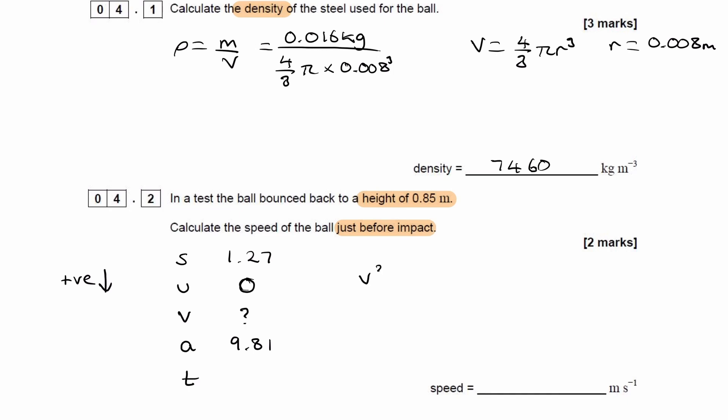And we're trying to work out the speed just before it hits the ground. So we can use v² = u² + 2as. V is then the square root of, so u is 0, so this will just be 2as, 2 times as. And that gives us 4.99 meters per second.